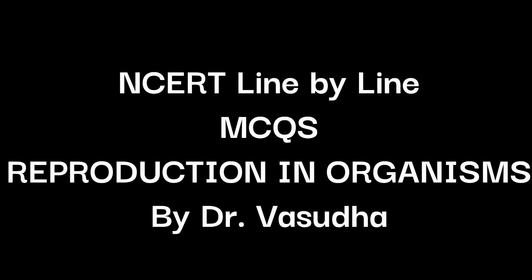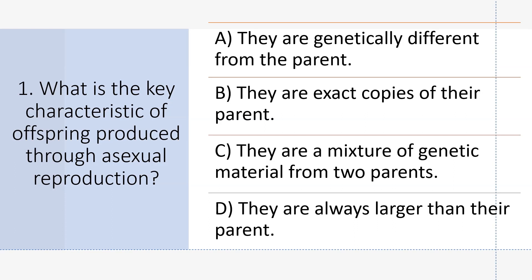NCERT line by line MCQs from Reproduction in Organisms. Asexual reproduction: What is the key characteristic of offspring produced through asexual reproduction? Answer B: They are exact copies of their parent.